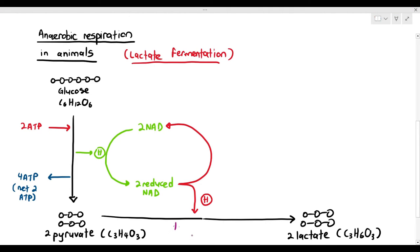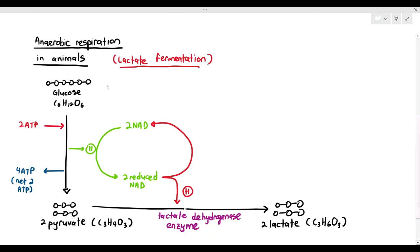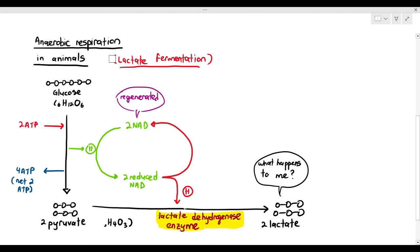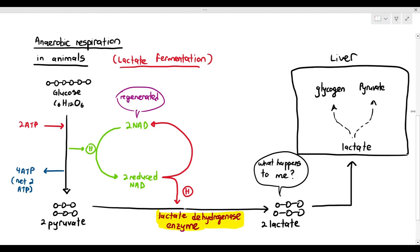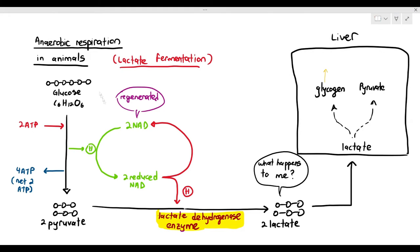To convert pyruvate into lactate, you require an enzyme called lactate dehydrogenase. You do need to remember the name of that enzyme because it may be asked in exams. What happens to the lactate? The lactate will be transported to the liver where, if your cells have enough oxygen and ATP, the lactate can be reconverted back into glycogen or pyruvate. The glycogen can be stored inside the cell, and the pyruvate, if there is enough oxygen, can enter the link reaction.